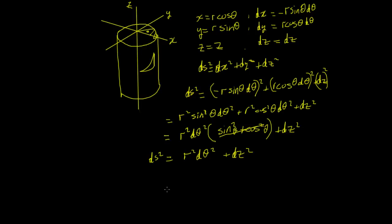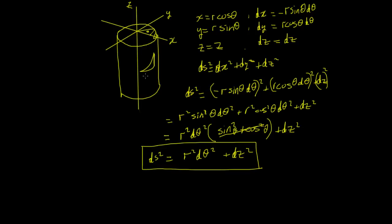Now you can actually work that out just by looking at the curve itself. You know that the distance round in an arc is r·dθ — as covered in the last video. So you can say straight away that that arc distance is r·dθ, and the height element is dz. So you can see intuitively that ds² = r²dθ² + dz², which the math confirms.